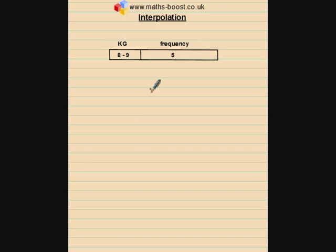Here however, we have a set of grouped data, and this causes us a problem, because we don't know what the original values of these five terms were. All we know is that they lie somewhere between 8 and 9 kilograms. So if we wanted to find the middle value of this grouped data, we have to approach it in quite a different way.